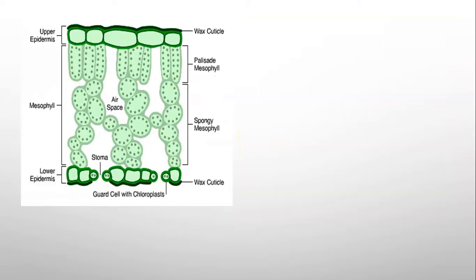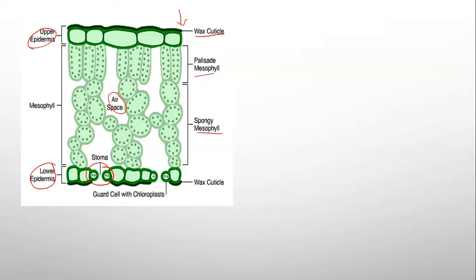If we look at the structure of a leaf, we find the upper epidermis at the top, the lower epidermis at the bottom, and in between them there is an air space and some mesophyll cells. The stomata are located here. The upper epidermis has a waxy cuticle, which is also a reason why there are fewer stomata on the upper region.